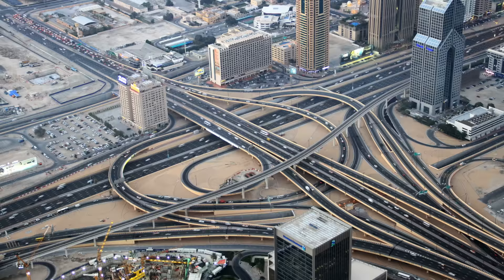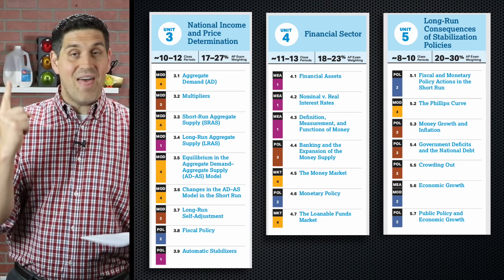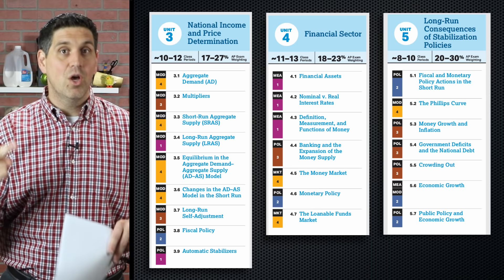Now, before I cover any of the topics in Unit 2, keep in mind that macroeconomics is the study of the whole economy and it's designed to do two things: one, measure the health of the economy, and two, fix it. So a macroeconomics class will focus on both these things. Here in Unit 2, we're going to talk about measuring the economy — how to measure growth, unemployment, and inflation. In Unit 3, we'll show some of those concepts on a graph, and then in Units 4 and 5, we'll talk about fixing the economy with fiscal and monetary policy.